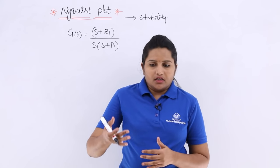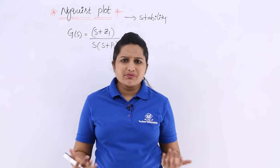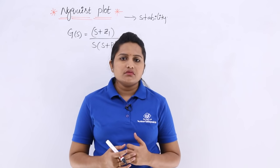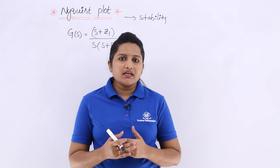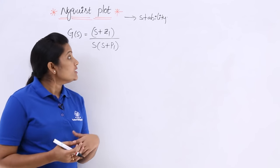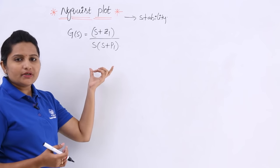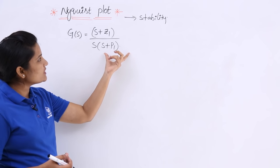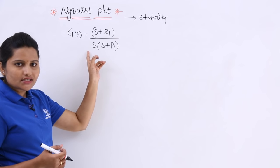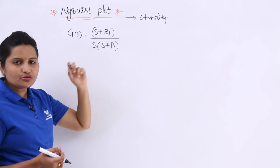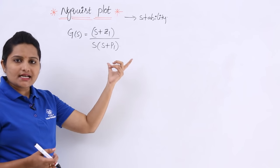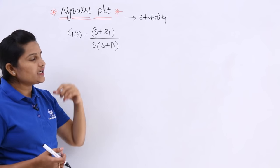Now when examining stability, all these plots are for stability analysis. To examine stability — how a system is said to be stable — we look at the Nyquist plot. Here the open loop transfer function of the system is G(s) = (s + z1) / [s(s + p1)], where the numerator indicates zeros and the denominator indicates poles.